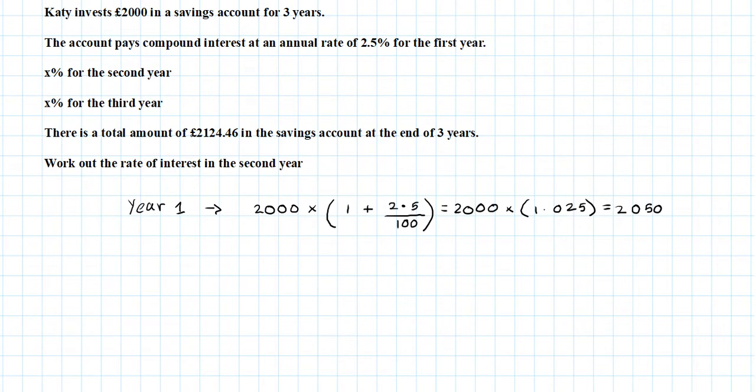That's the amount for the first year. So for the second year, I'm going to compound this amount: £2050 times 1 plus x over 100, because the interest rate is x.